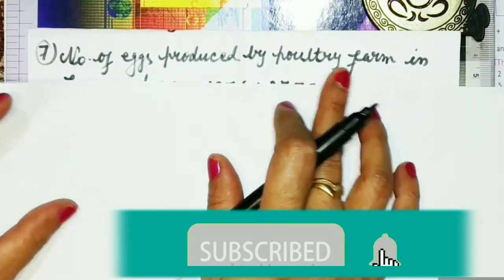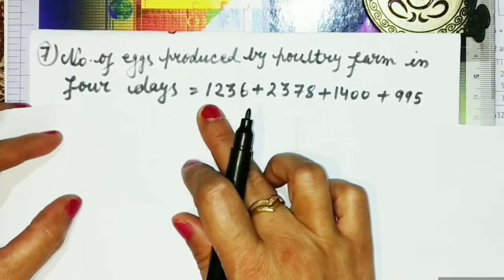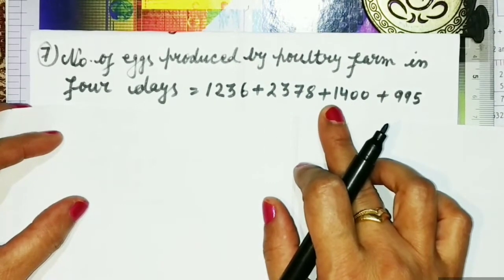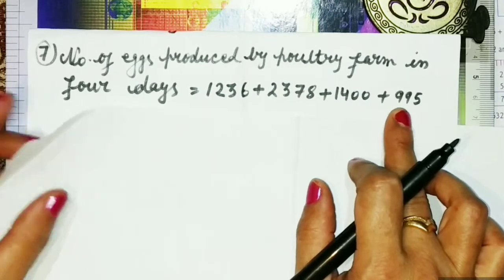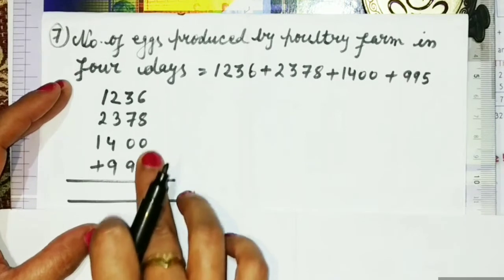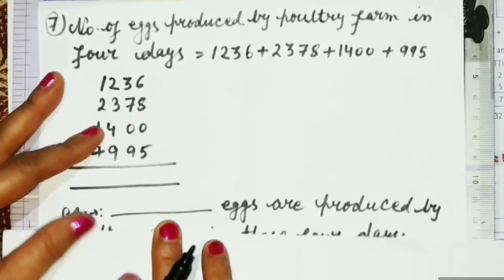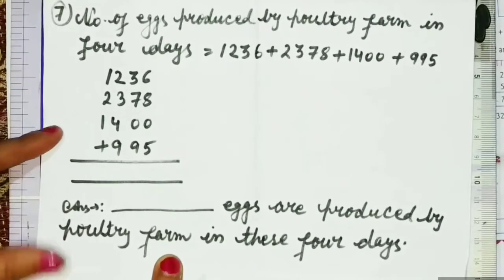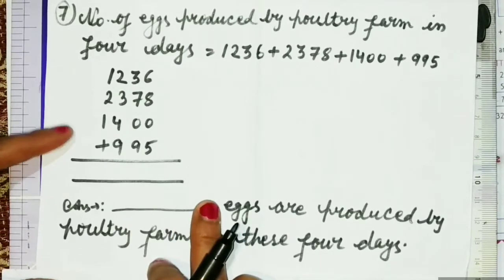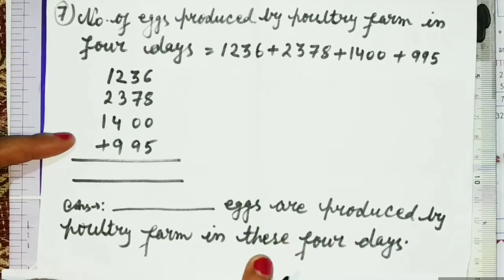Number of eggs produced equals 1236 plus 2378 plus 1400 plus 995. Now we will add them all. Students, you have to do the addition and write the answer in this blank space. The answer statement: first write the digit that comes, then write 'eggs are produced by the poultry farm in these four days.'